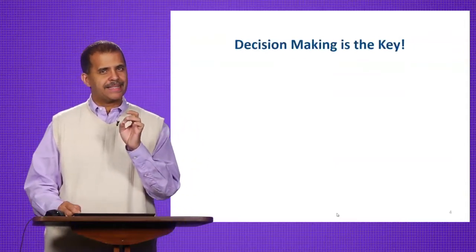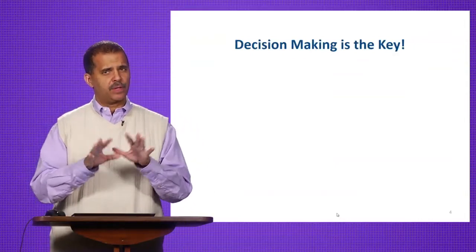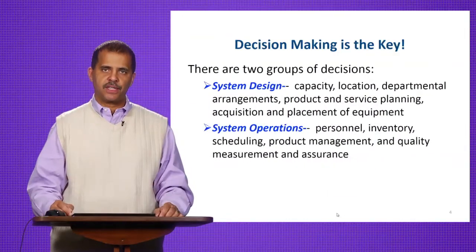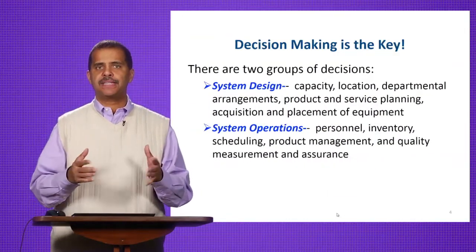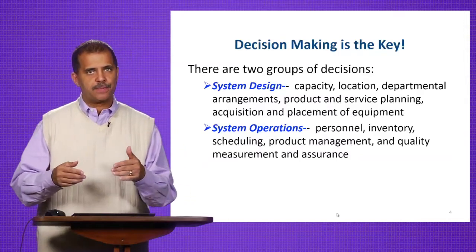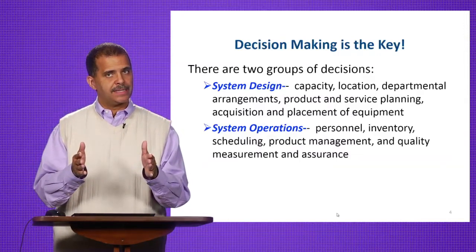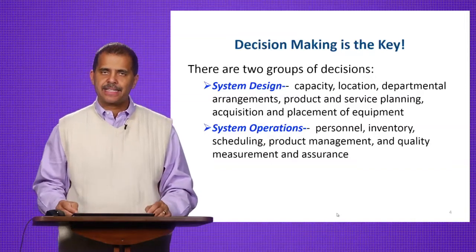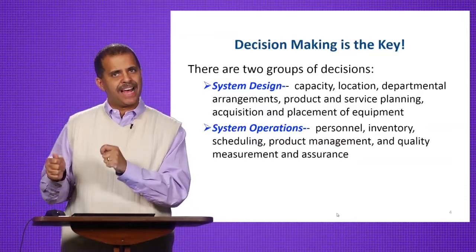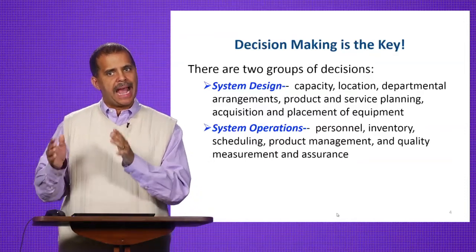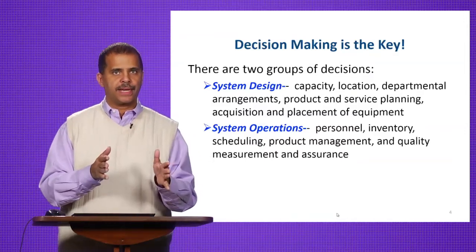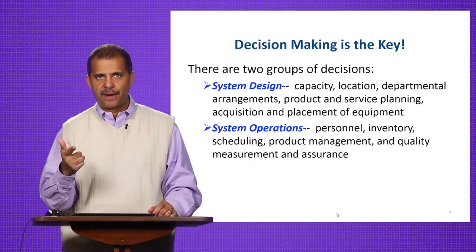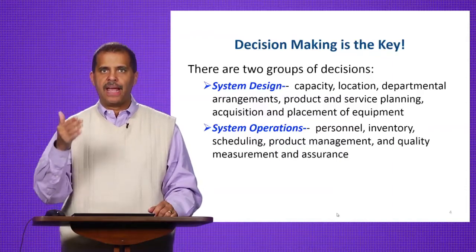Decision-making is really the key when thinking about quantitative aspects of healthcare management, and there are two types of decisions. One involves systems design — that covers facilities, processes, and selection systems. The second is systems operation: once you've designed your healthcare delivery system, how do you make sure it runs smoothly and achieves high-quality, safe, satisfying care at a low cost?